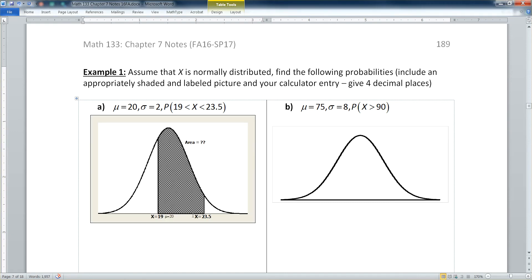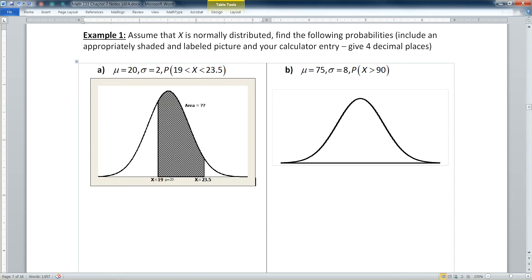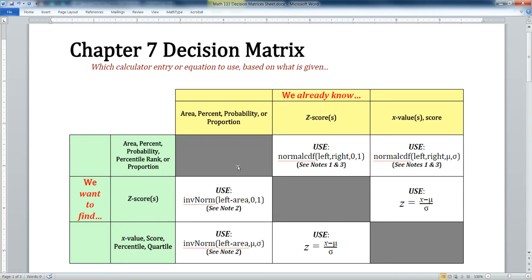There it is. All right, so you can see that I've labeled my mean line, which is 20 down the middle. I have 19 over here on the left, but it's not all the way to a full standard deviation away. It's very important that you place the vertical lines in appropriate spots. And 23.5 is over here. Now we want to find that area. Now this is a time where you want to pull out those pages in the back of your course pack and you want to use them. We want in particular the chapter seven decision matrix, which looks like this.